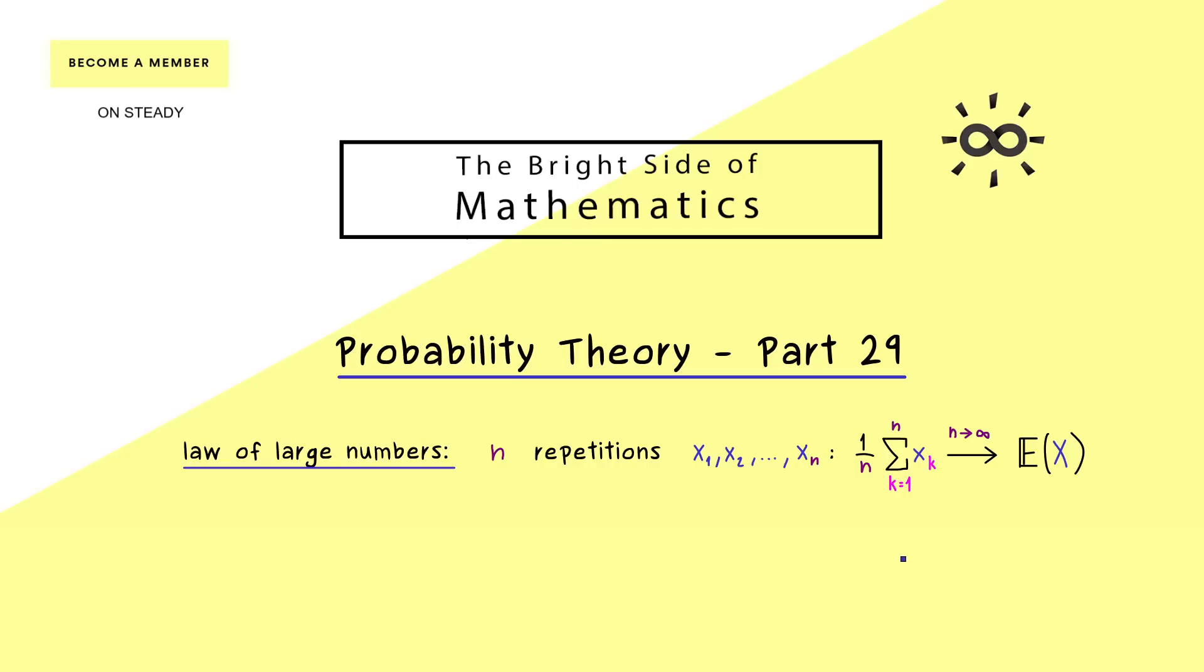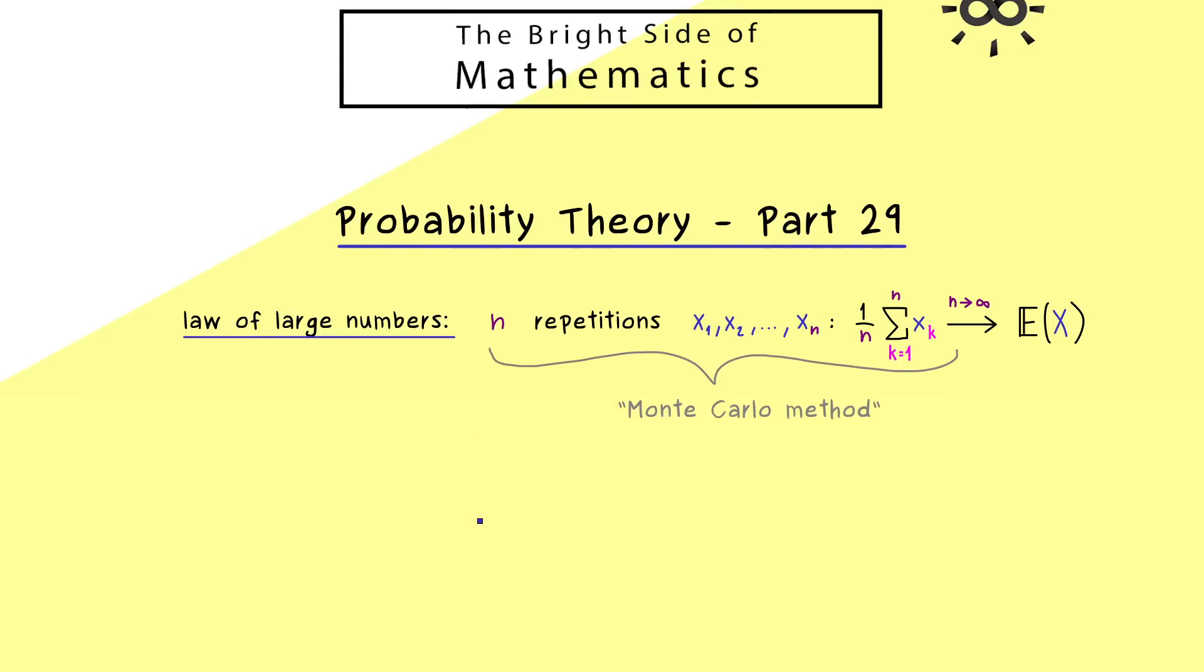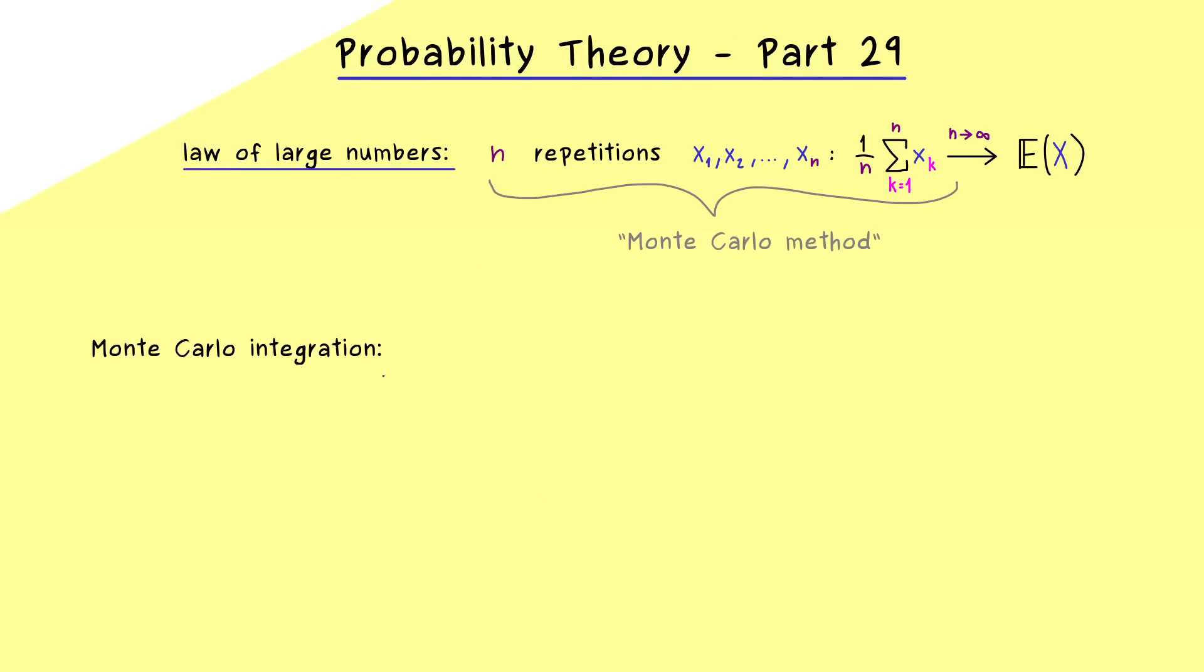Okay and now the so-called Monte Carlo methods use this fact to approximate this value here on the right hand side. In other words we have a numerical approximation here by using the randomness. And how this works in practice we can now see with the numerical integration. In particular this one is used in higher dimensions but I will explain it here in the one-dimensional case.